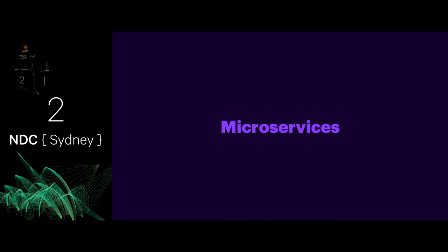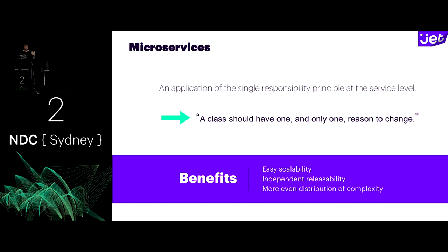So microservices — we're very much using all of these things in production at scale. I found that I really needed to define what a microservice means to us at Jet. For us, it's an application of the single responsibility principle at the service level — a class should have one and only one reason to change. A microservice isn't just one function or the amount of code a two-pizza team can write in a week and a half. It simply should have one reason to exist, one purpose.